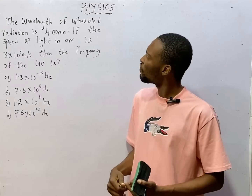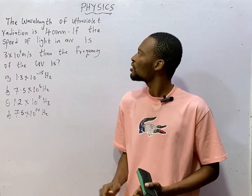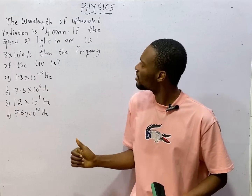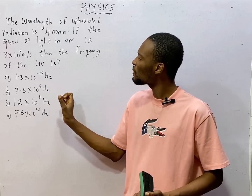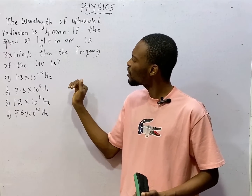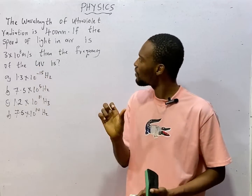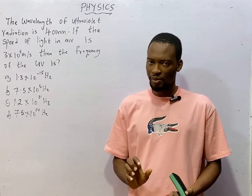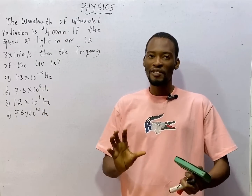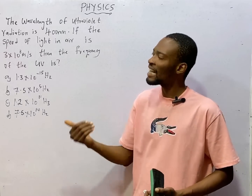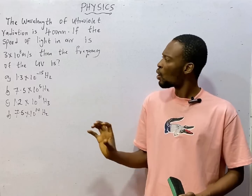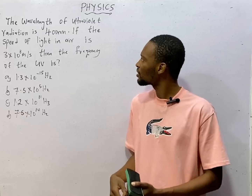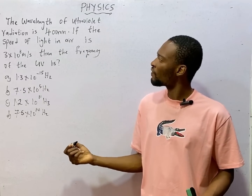The wavelength of ultraviolet radiation is 400 nanometers. If the speed of light in air is 3 × 10⁸, then the frequency of the UV ultraviolet radiation is — these are the options given to us. In physics, when you see questions, analyze them sentence by sentence. And one thing you should know in physics is understanding conversions.